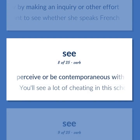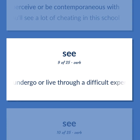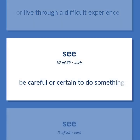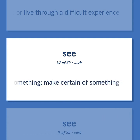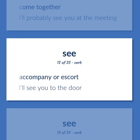SEE: Perceive or be contemporaneous with — you'll see a lot of cheating in this school. Undergo or live through a difficult experience. Be careful or certain to do something; make certain of something. Come together — I'll probably see you at the meeting. Accompany or escort — I'll see you to the door.